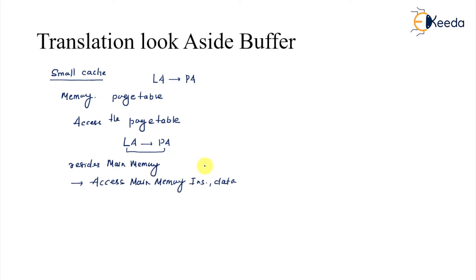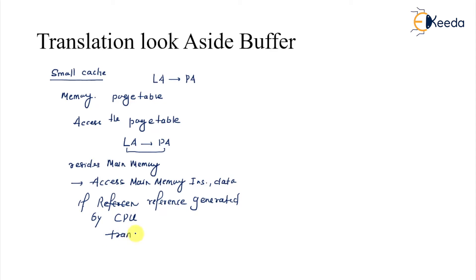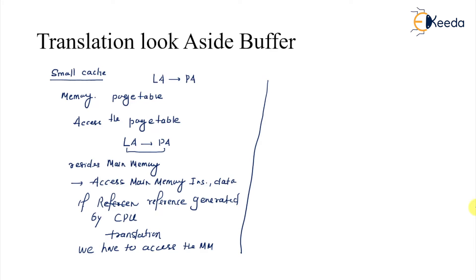So any reference given by the CPU — first you go and translate. For this translation we have to access the main memory. So effectively, for accessing any instruction or data, this becomes two memory accesses: one for the page table and one for the instruction or data.